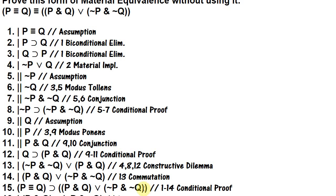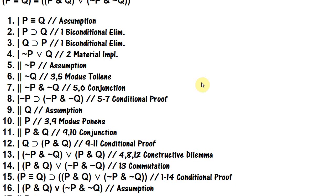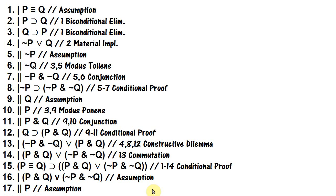Now we're going to do the other conditional proof, going from 'p and q or not p and not q' to try to prove 'p if and only if q.' We begin with the assumption 'p and q or not p and not q.' We know the biconditional is equivalent to a pair of conditionals, so if we prove each of those conditionals we can use biconditional introduction to get the biconditional we're looking for. We start with trying to prove 'if p then q,' so we assume p.